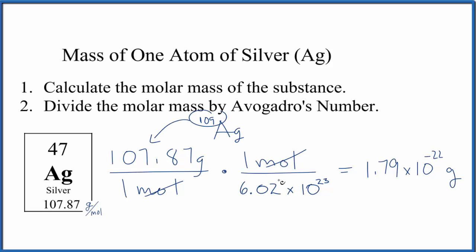put that in and divide by Avogadro's number. That would give you the mass of one atom of silver 109. The isotope silver 109.